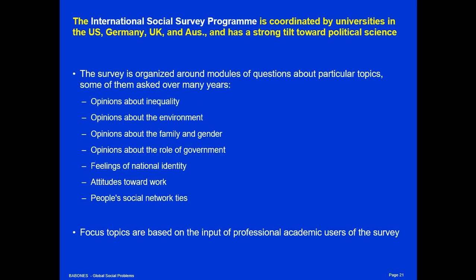The International Social Survey Program, or ISSP, is actually a university-run program — in Australia it's run by the Australian National University — and it has a strong tilt towards political science questions. The ISSP asks people all sorts of political opinions about things like inequality, the environment, gender roles in the family, and whether or not the government should be involved in people's lives. Each year in the program, they also have a focus topic — things like social capital, gender relations, or attitudes towards democracy — and every few years these special topics come up again for reconsideration.